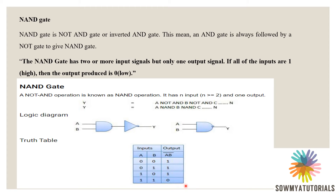The NAND gate is another derived gate. NAND means NOT plus AND gate, so we can call it an inverted AND gate — the AND gate followed by a NOT gate. The NAND gate has two or more input signals and produces only one output signal. In the truth table: when both operands are 1, the output is 0; otherwise the outputs are 1.